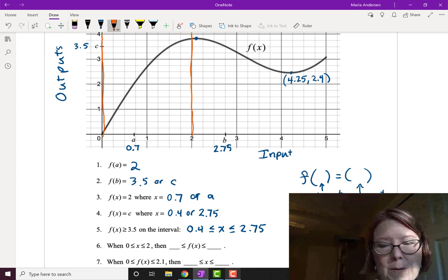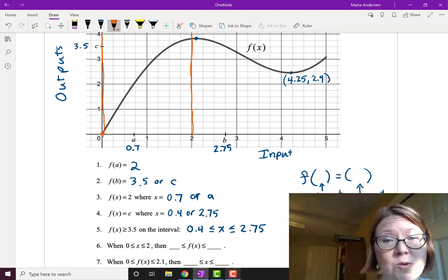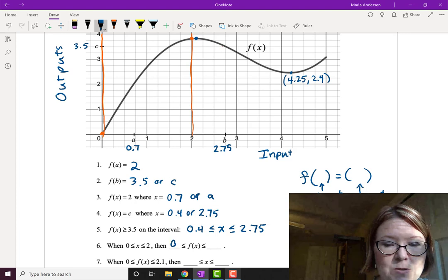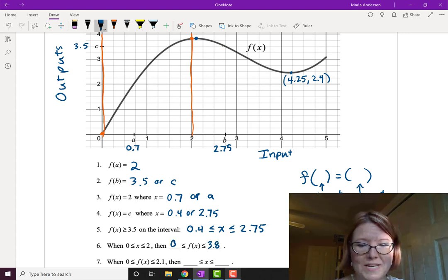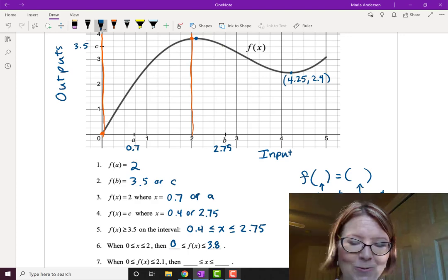Then the y values, the output values, are between what? We can see that the lowest output value is 0 and the highest output value is about 3.8. So f of x is between 0 and 3.8. We fill in the expression so that it reads 0 is less than or equal to f of x is less than or equal to 3.8.